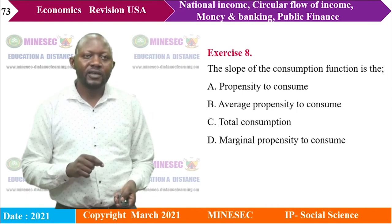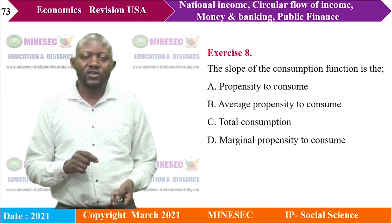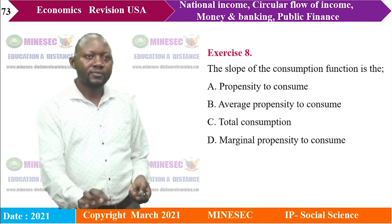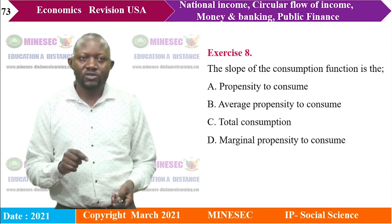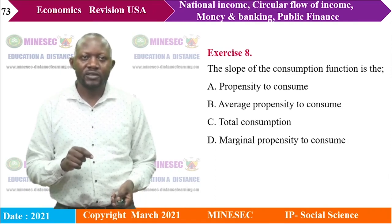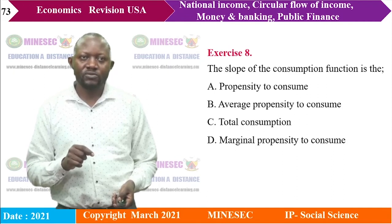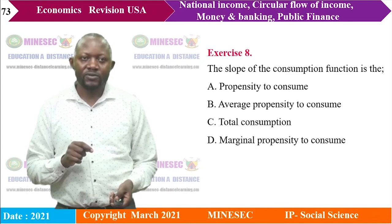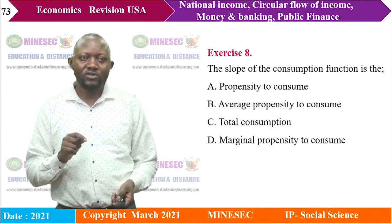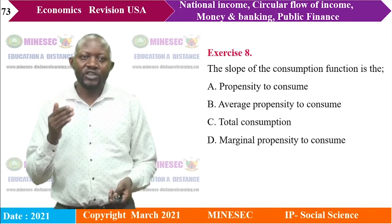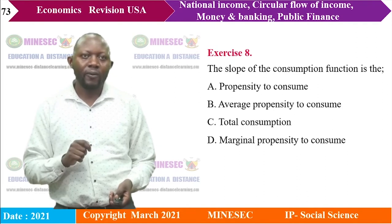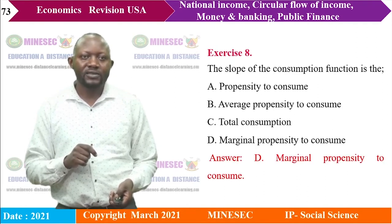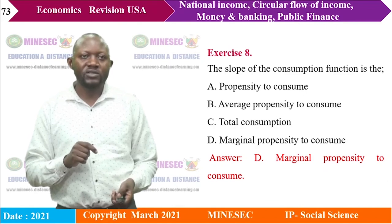Exercise 8: The slope of the consumption function is: A) propensity to consume, B) average propensity to consume, C) total consumption, D) marginal propensity to consume. The right answer is D — marginal propensity to consume (MPC = ΔC/ΔY), which shows the gradient of the consumption function.